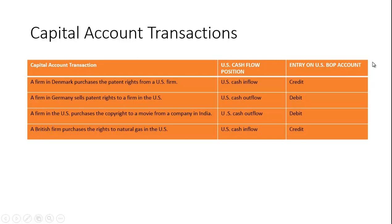Here are some examples of capital account transactions. A firm in Denmark purchases patent rights from a US firm — that's a US cash inflow and a credit on the US balance of payments account. If a firm in Germany sells patent rights to a US firm, that's a US cash outflow and a debit. If a US firm purchases the copyright to a movie from a company in India, that's a US cash outflow and recorded as a debit. If a British firm purchases the rights to natural gas in the US, that's a US cash inflow and recorded as a credit.